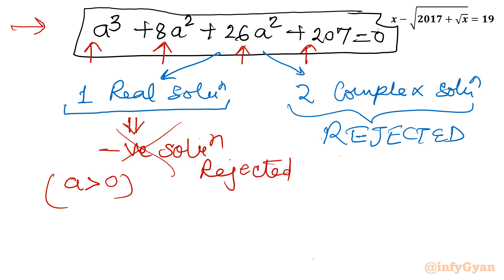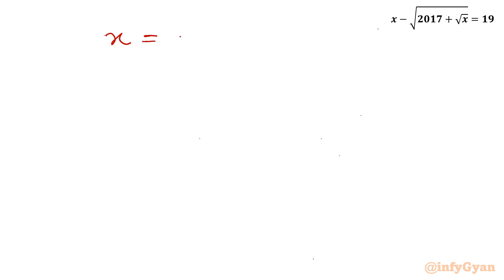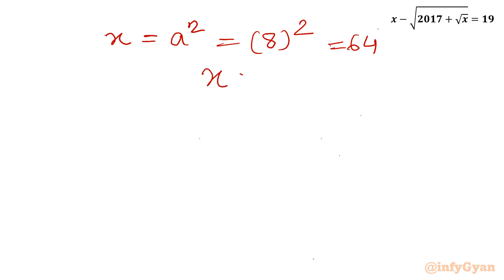So the only accepted solution is a equal to 8, which was our base solution. Now remember, a equals square root x, so x equals a squared. Therefore x equals 8 squared equals 64. Our final solution is x equal to 64.